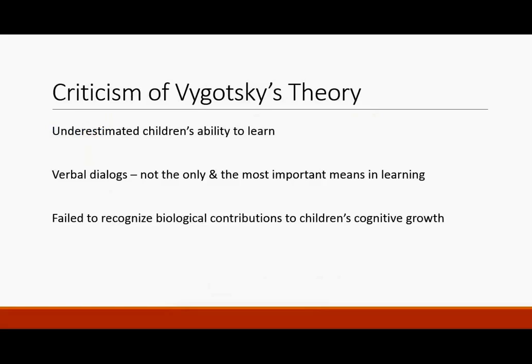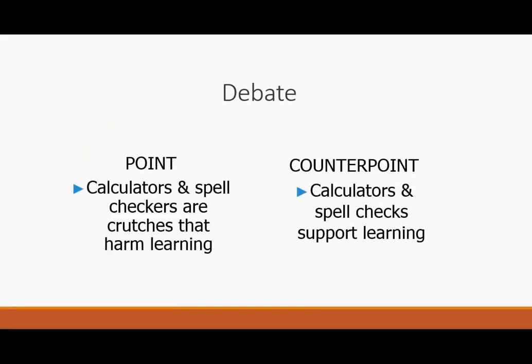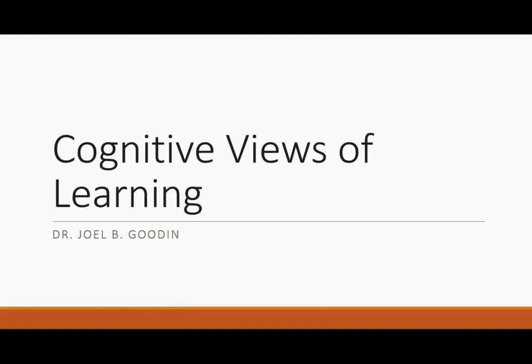Criticisms of Vygotsky's thinking include: he underestimated children's ability to learn; verbal dialogue is not the only or most important means of learning; and he failed to recognize some biological contributions to children's cognitive growth. There's also a debate worth considering: are calculators and spell checkers crutches that harm learning, or do they support learning? Next, Dr. Gooden will be speaking about cognitive views of learning. Thank you.